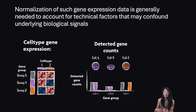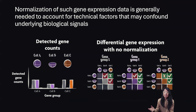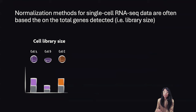Now consider we measure this gene expression in lots of cells, three of which are shown here: two cells, A and B, are cell type 1, and one cell, cell C, is cell type 2. However, for technical reasons related to sequencing depth, all the genes in cell B are detected at a lower level than in cell A and cell C. If we perform differential expression analysis or fold change analysis using such unnormalized gene expression, we may erroneously conclude that the group X genes are different between cell B and the other two cells, and that group Y genes are different between cell A and cell B, even though they're the same cell type.